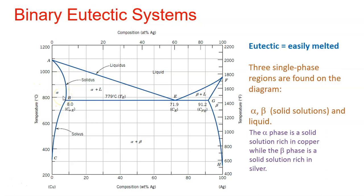The solubility limit for the alpha phase corresponds to the boundary line A-B-C. As the temperature increases — this axis here is for temperature — the solubility of silver in copper will also increase to a maximum at point B, which can accommodate up to 8.0 weight percent of silver at 779 degrees Celsius.